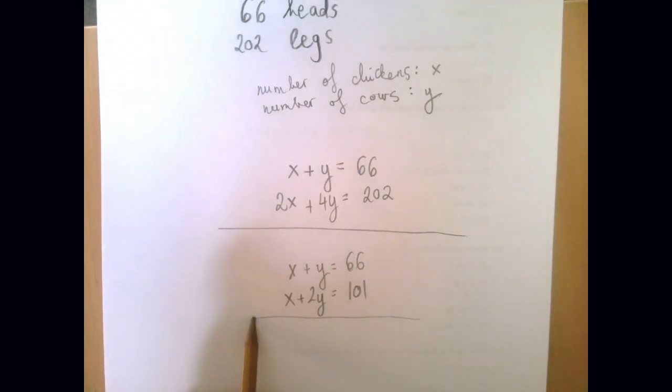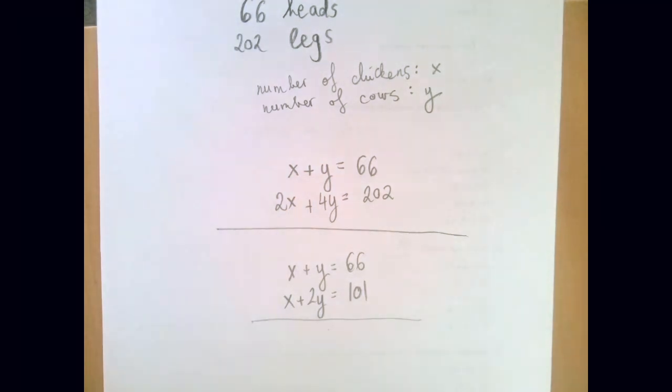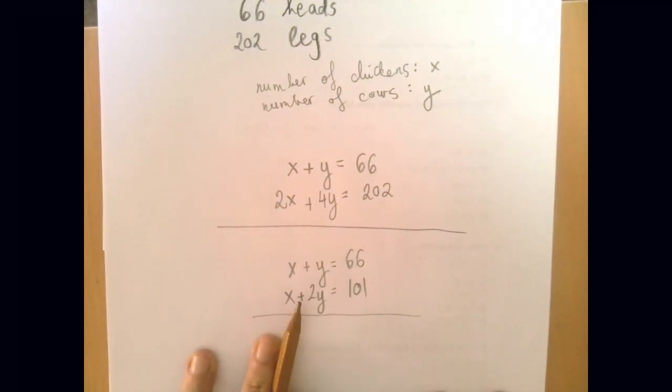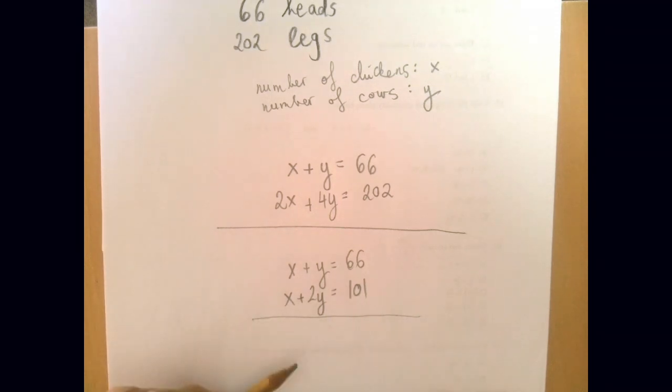I would say don't ever subtract, instead add the opposite. So this is now a very nice system. We can cancel out x if we just subtract the two equations from each other. But to subtract is to add the opposite, so to be really careful, we're going to rewrite it.